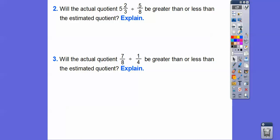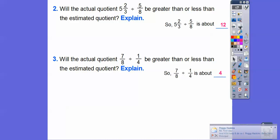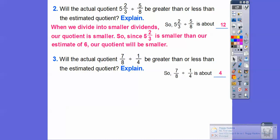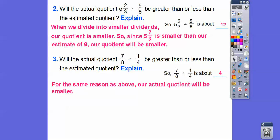So will the actual quotient of 5 and 2/3 divided by 5/8 be greater than or less than the estimated quotient of 12? Well, since 5 and 2/3 is smaller than our estimate of 6 — which we rounded up to — our actual quotient is probably going to be smaller than 12. And will the actual quotient of 7/8 divided by 1/4 be greater than or less than the estimate of 4? For the same reason — since 7/8 is smaller than 1, which we rounded up to — the actual quotient will also be a little bit smaller than 4.